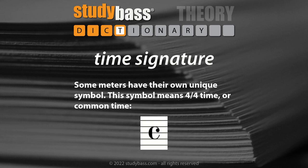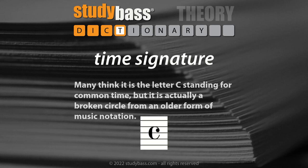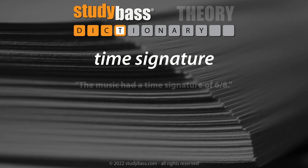Some meters have their own unique symbol. This symbol means 4/4 time, or common time. Many think it's the letter C standing for common time, but it's actually a broken circle from an older form of music notation. The music had a time signature of 6/8.